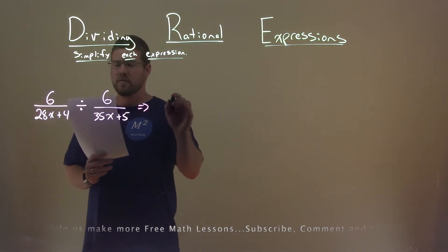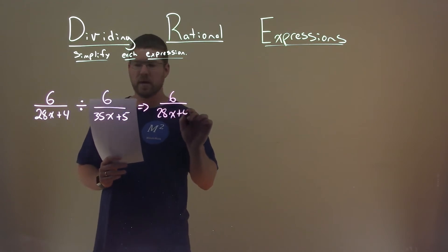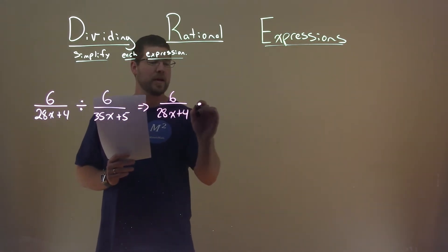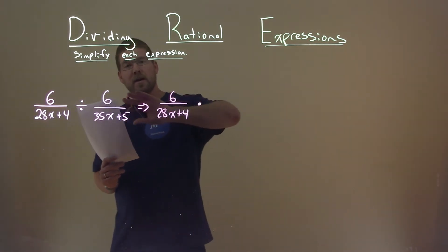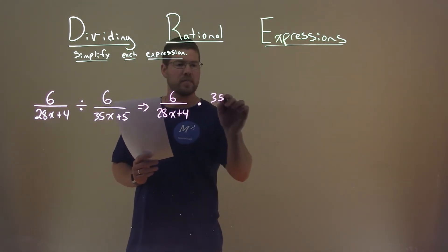Well, I like to rewrite this. So I rewrite the first part: 6 over 28x plus 4. And when I rewrite this, it's going to be a multiplication problem, meaning I can make it multiplied now. Just flip the second fraction: 35x plus 5, now over 6.